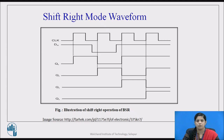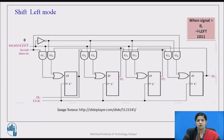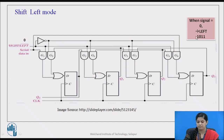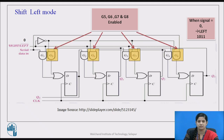Now we will move towards shift left mode. Here the reverse procedure applies — right-left bar is provided with input 0, which allows the whole circuit to act in shift left mode. Again we take the input bit stream as 1011 and we have to display the same bits 1011 at Q0 through Q3. We select the leftmost bit of this bit stream, which is 1. This enables gates G5, G6, G7, and G8. Gates G1, G2, G3, and G4 will give output 0.